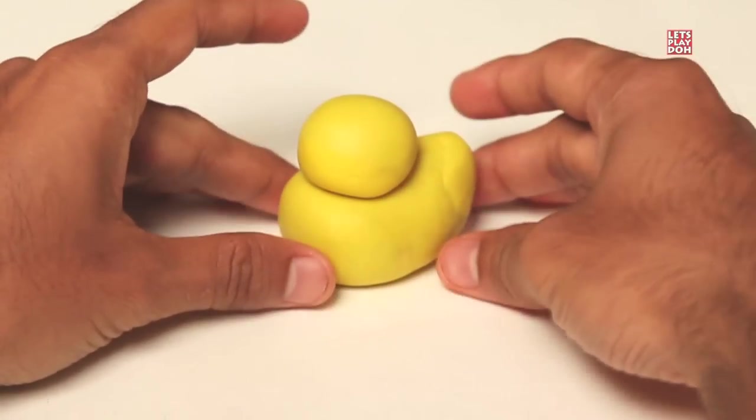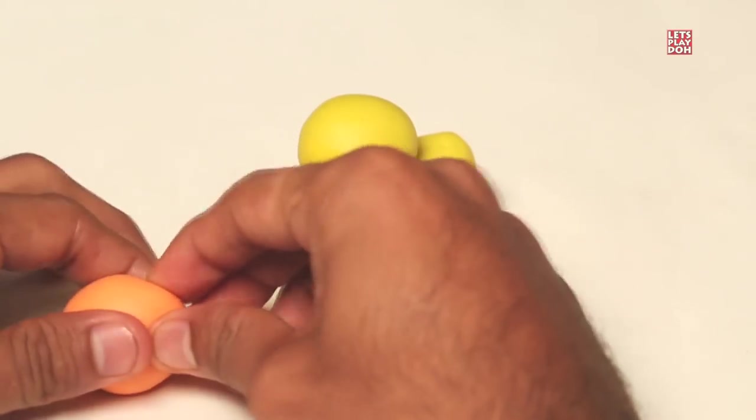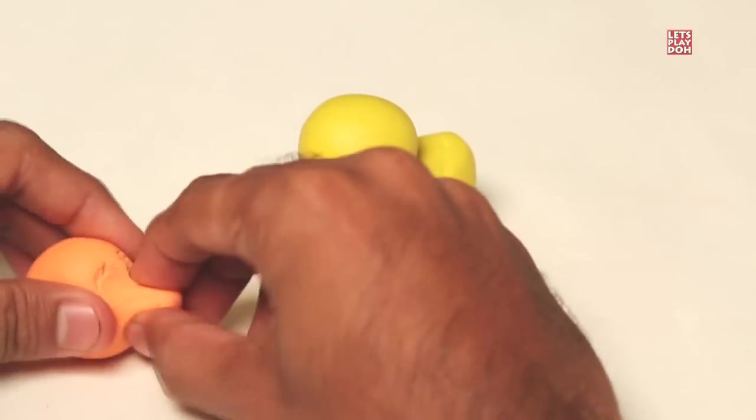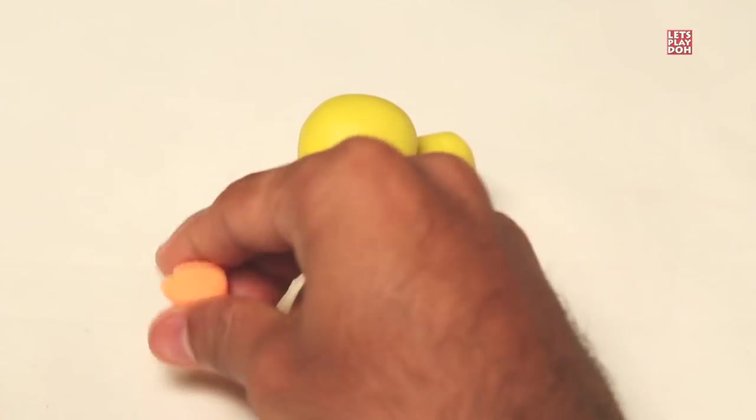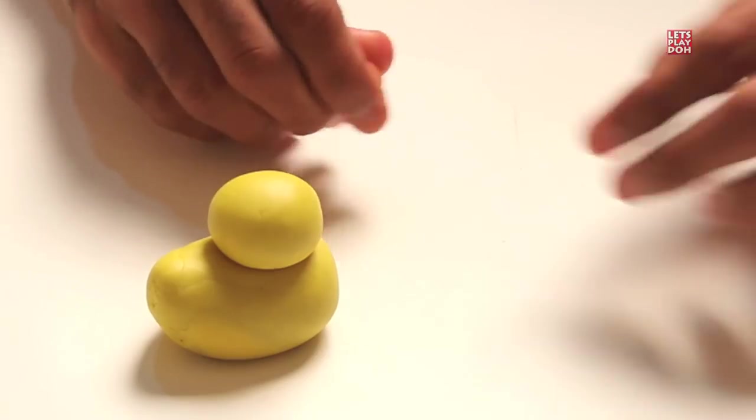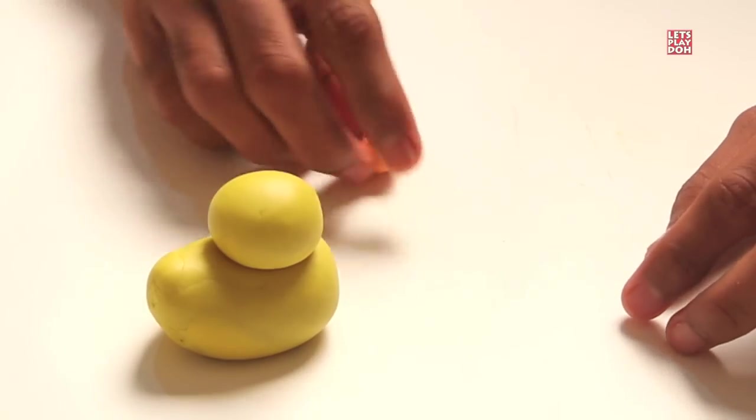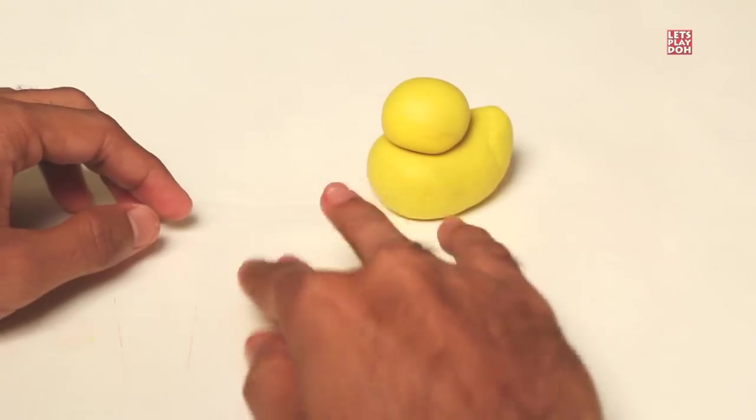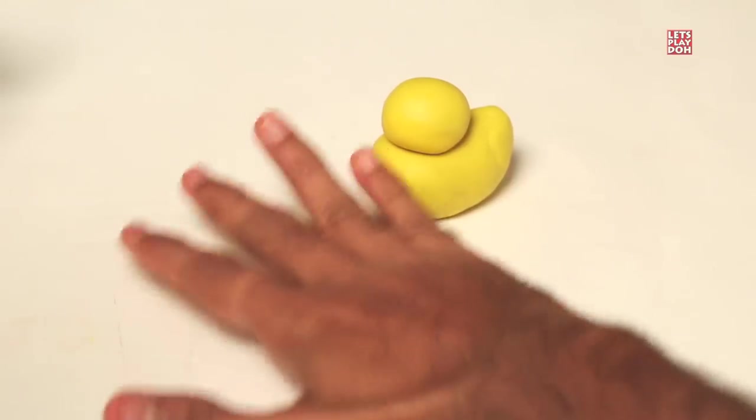Now put the yellow play-doh aside. We have the body and the head of our ducky. And now we're going to take some orange play-doh, just a little bit. What we're going to do is create the bill of the ducky's face. You know the bill? You know the part where the mouth, the ducky goes quack, quack?